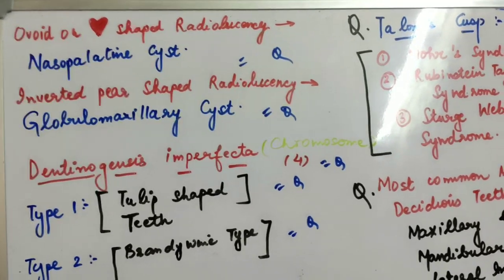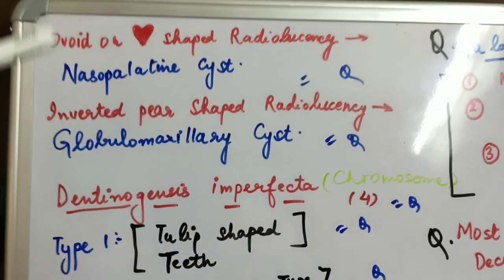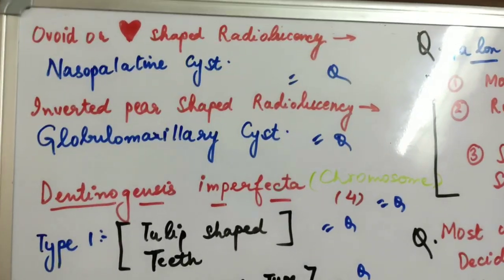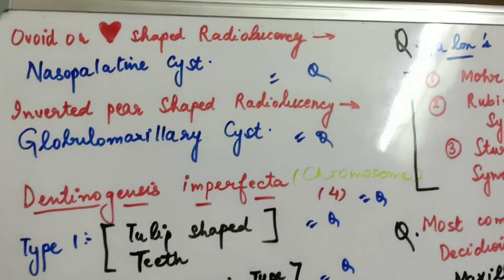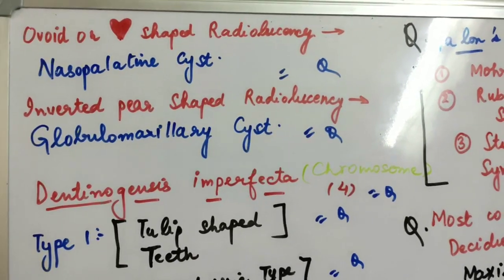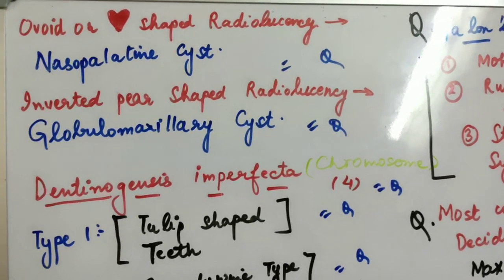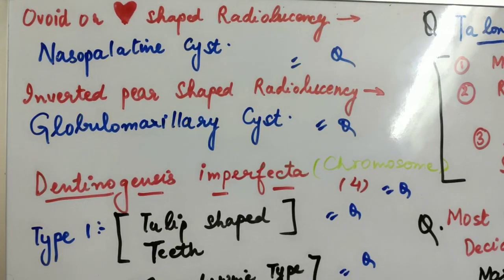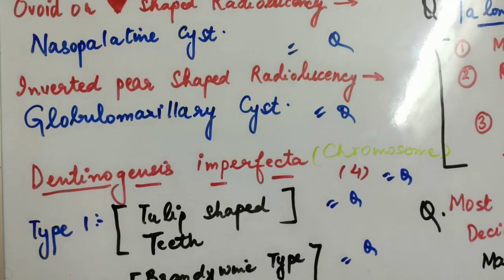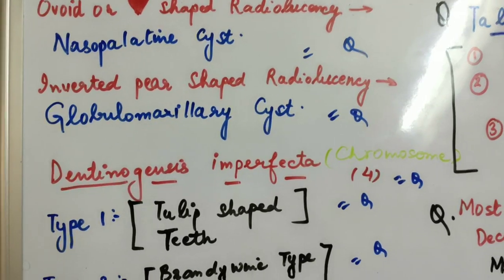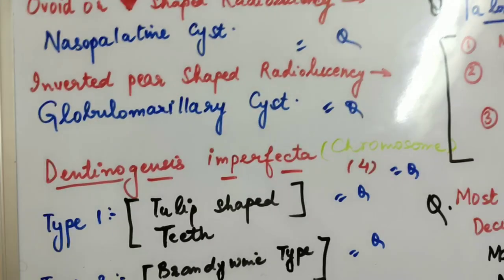The most important questions: First question is ovoid or heart-shaped radiolucency. This question arises many times. Ovoid or heart-shaped radiolucency - in which cyst is this seen? That is nasopalatine cyst. Second question that arises many times is inverted pear-shaped radiolucency. In which cyst is this seen? That is globulomaxillary cyst.